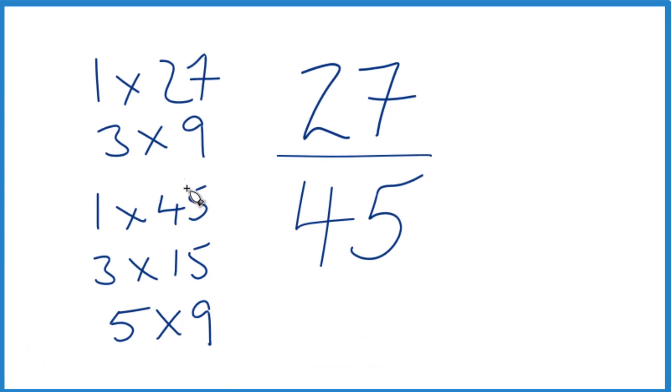Those are the factors for 45. It looks like 9 is in common. That's the largest one in common. So we'll divide 27 by 9, 45 by 9, and we'll simplify the fraction 27 over 45.